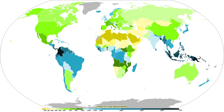Snow crystals form when tiny supercooled cloud droplets freeze. Once a droplet has frozen, it grows in the supersaturated environment. Because water droplets are more numerous than ice crystals, the crystals are able to grow to hundreds of micrometers in size at the expense of the water droplets. This process is known as the Wegener-Bergeron-Findeisen process. The corresponding depletion of water vapor causes the droplets to evaporate, meaning that the ice crystals grow at the droplets' expense. These large crystals are an efficient source of precipitation, since they fall through the atmosphere due to their mass, and may collide and stick together in clusters or aggregates.